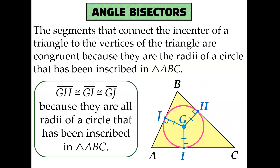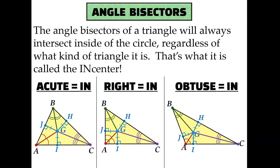That equal distance exists because we can inscribe a circle in the triangle, which makes each of those segments — JG, HG, and IG — radii of that circle, with point G, the incenter, as the center. You might wonder why it's called the incenter: it's because the incenter will always be inside the triangle, unlike perpendicular bisectors which might be inside, outside, or on the triangle. So that's a good clue to remember — incenters have to be inside.